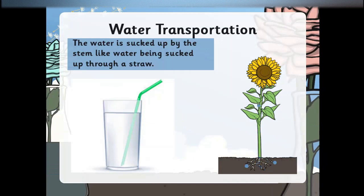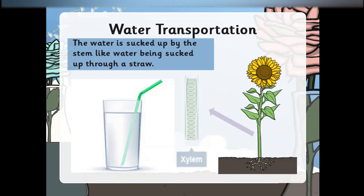The water is sucked up by the stem, like water being sucked up through a straw. This water transportation takes place through tubes present in the stem called xylem.